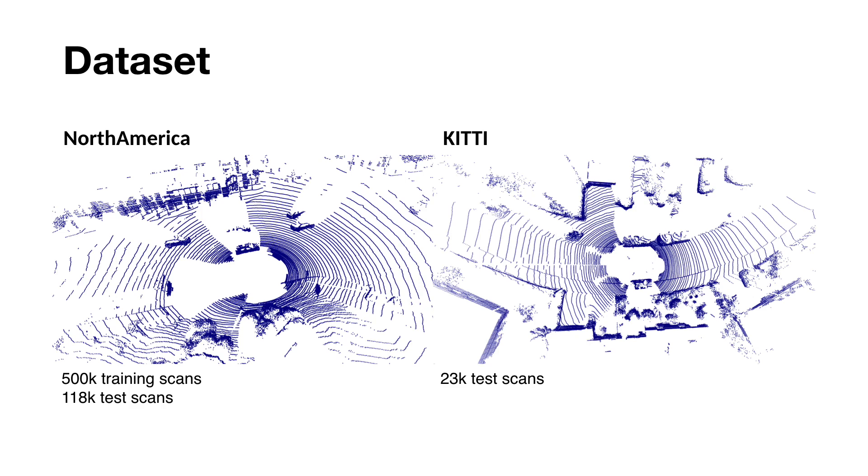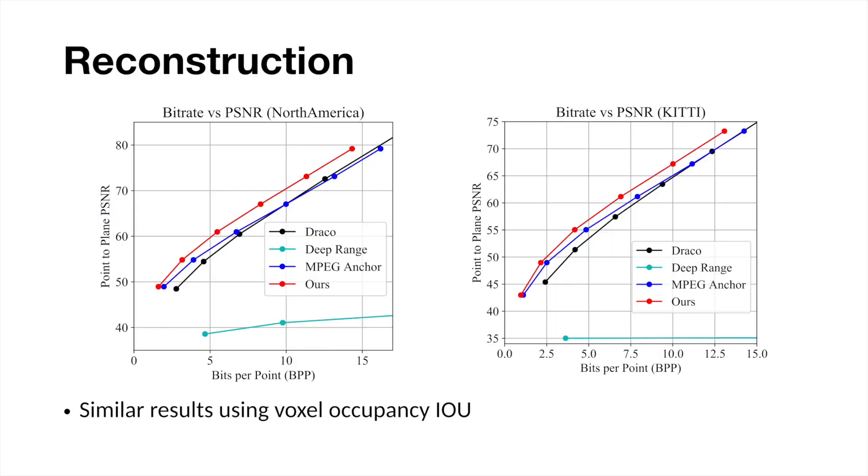We evaluated our method on two challenging LiDAR datasets, a new dataset of urban and highway environments in North America, and the public self-driving dataset KITTI. We quantitatively measure reconstruction quality using point-to-plane PSNR, a common metric for point cloud similarity which uses distances to planar approximations of the point cloud, as well as voxel occupancy IOU.